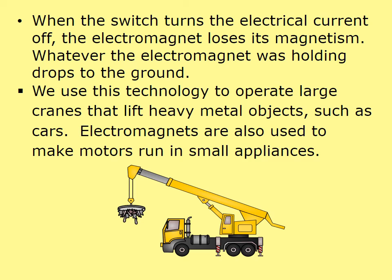When the switch turns the electrical current off, the electromagnet loses its magnetism and whatever it was holding drops to the ground. We use this technology to operate large cranes that lift heavy metal objects such as cars. Electromagnets are also used to make motors run in small appliances.